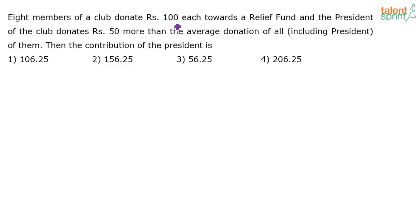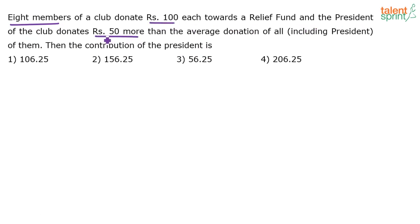Eight members of a club donate rupees 100 each towards a relief fund. The president of the club donates rupees 50 more than the average donation of all of them, including the president. So basically there are eight members, each donating rupees 100, and the question is: what is the contribution of the president?